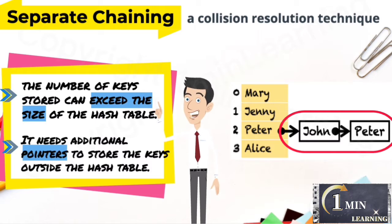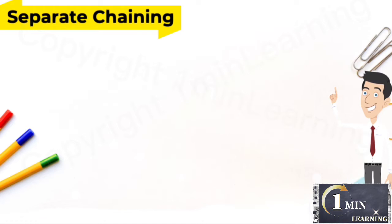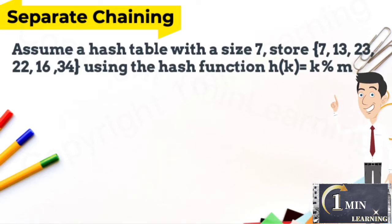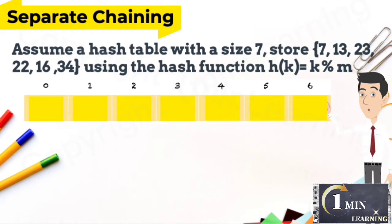Now let's look at the example. Assume a hash table with a size 7, store them using the hash function. How to do it? Where to place them?